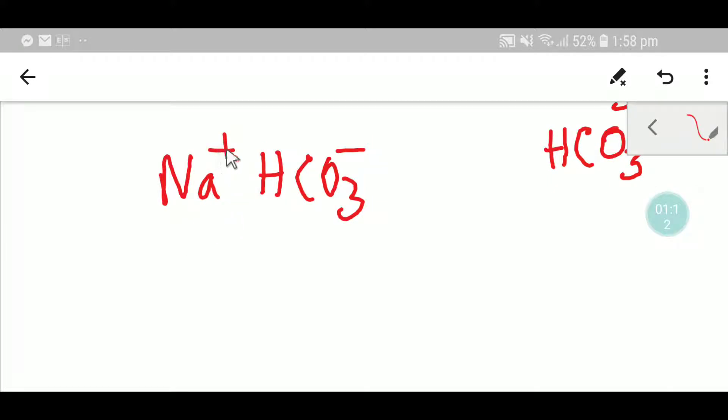Here, the one positive charge and one negative charge cancel each other, and you get sodium bicarbonate: NaHCO3. The modern name or IUPAC name for sodium bicarbonate is sodium hydrogen carbonate.